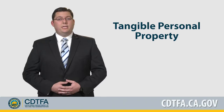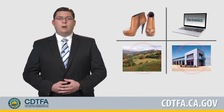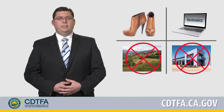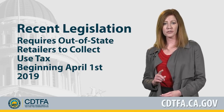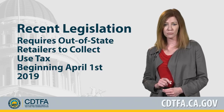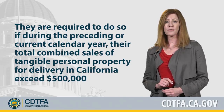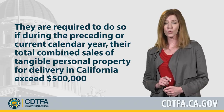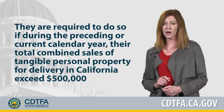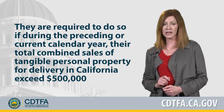Tangible personal property includes items that can be touched or felt, like shoes or electronic equipment, but excludes real property like land or buildings. Recent legislation requires out-of-state retailers to collect use tax beginning April 1, 2019, if during the preceding or current calendar year their total combined sales of tangible personal property for delivery in California exceed $500,000.